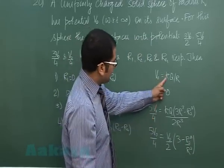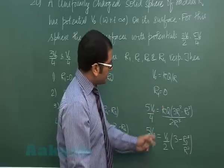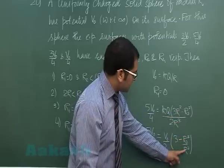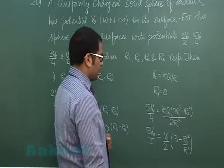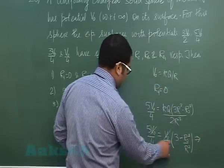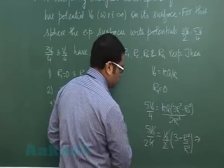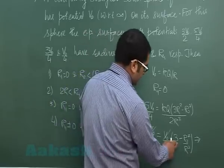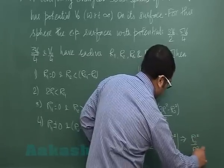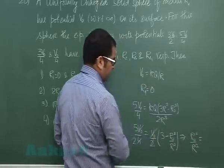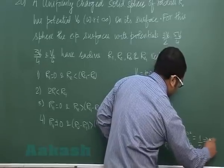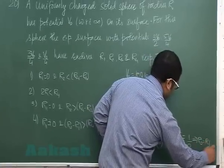That becomes R square, so that will be 3 minus R2 square by R square. What I did is I simply plugged the value of KQ as V naught into R. On solving this, that would be 2.5 and that's 3, so that will become R2 square by R square 0.5, so I can write that as 1 by 2, implying R2 as R by root 2.